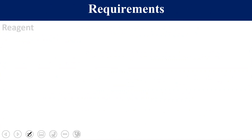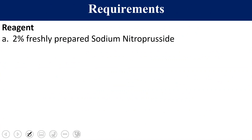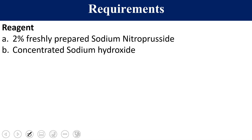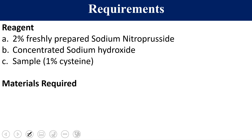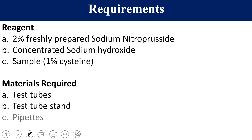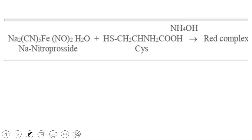The requirements for this test include reagents and equipment. For reagents, we require a 2% freshly prepared sodium nitroprusside solution, a strong alkali such as concentrated sodium hydroxide, and the test sample. Equipment required includes test tubes, test tube stands, pipettes, and a water bath — because sometimes if color does not appear, you need to heat the solution.